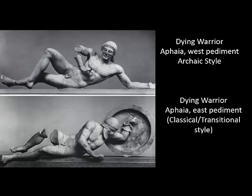What happened was there was this structure called the Afia, and when the Afia was initially built it was during the archaic period, so the sculptures seen on the pediment and the frieze were in the archaic style. Approximately 20 years later there was a fire that damaged much of the sculpture on the Afia, and they decided to recreate the sculptures. Within that 20-year period, Greece had shifted to the classical transitional style, so when they made those revisions they revised them within the new style, which explains the similarities yet the difference within style.